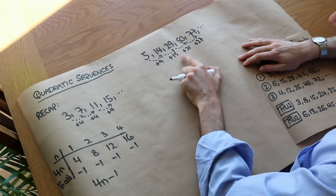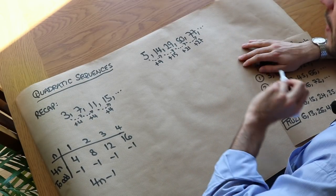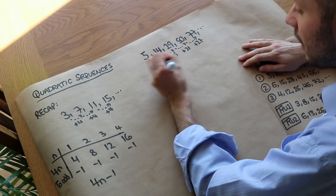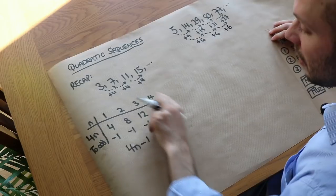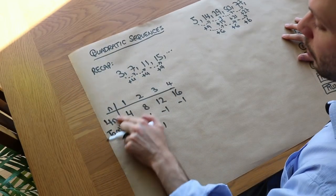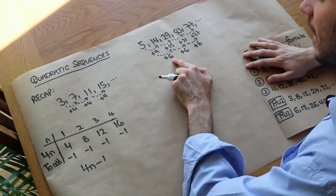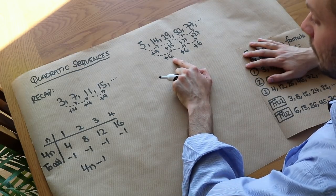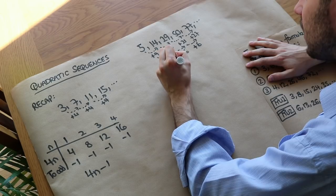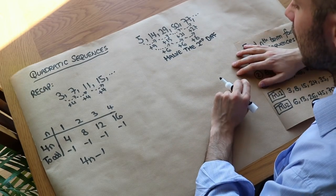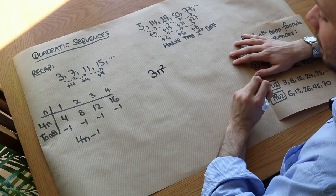This time the difference is not the same each time — it's 9 then 15 — so we need to find the second difference, which is the difference of the difference. We can see it's going up by 6 each time. When the first difference was constant, we put that number in front of n. This time, with a second difference of 6, we halve that number to get 3, and put it in front of an n squared term, starting our formula with 3n squared.